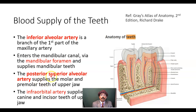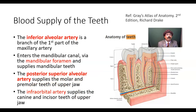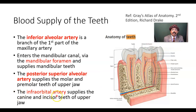The posterior superior alveolar artery supplies the molar and premolar teeth of the upper jaw. The infraorbital artery supplies the canine and incisor teeth of the upper jaw.